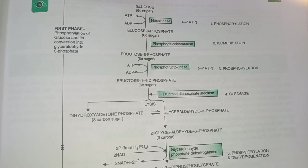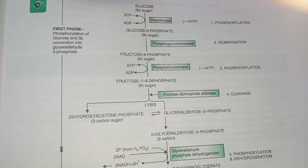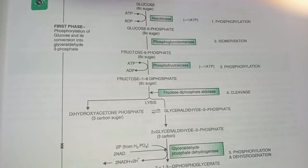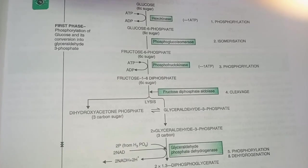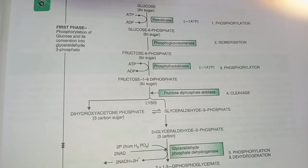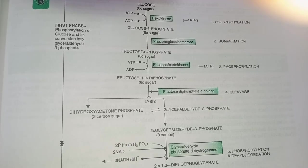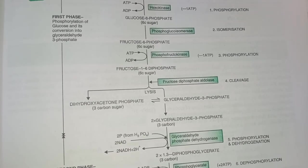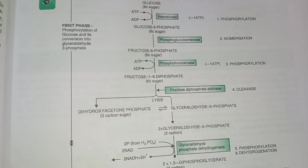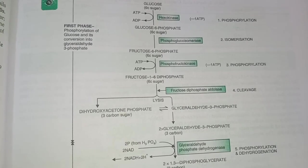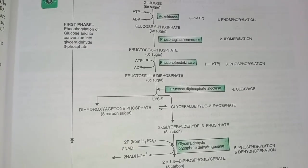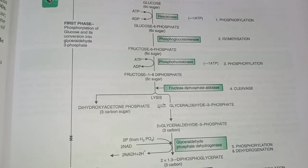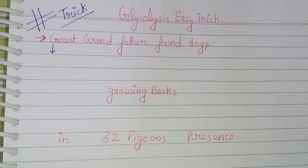Glycolysis is the oxidation of glucose into pyruvate or lactate with the production of ATP. There are two types of glycolysis: aerobic glycolysis, in the presence of oxygen, in which we get the end product pyruvate; and anaerobic glycolysis, in the absence of oxygen, in which we get the by-product lactate. Now we will see the glycolysis, or Embden-Meyerhof pathway, in detail.